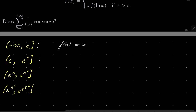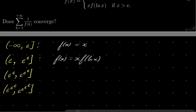On the second piece, from e to e^e, notice that our argument is already greater than e. So f of x is x times f of natural log of x. And notice that this time our argument, natural log of x, is somewhere between 1 and e, so f of natural log of x is just natural log of x. Therefore on this interval f of x equals x times natural log of x.